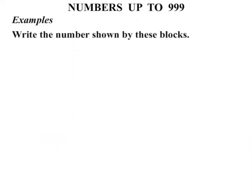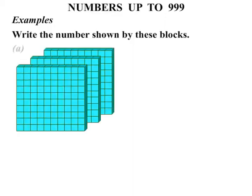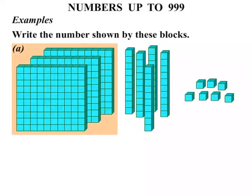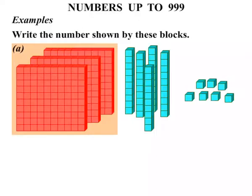Examples. Write the number shown by these blocks. Part A we have a number of flats, a number of longs and then some shorts. Now let's see what we have got. Remember each flat is worth 100. So we are going to count in hundreds. 100, 200, 300. So 300 so far.